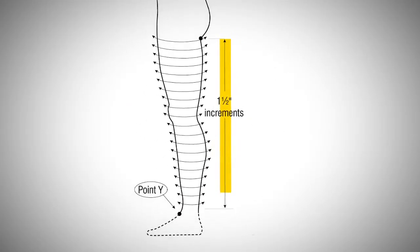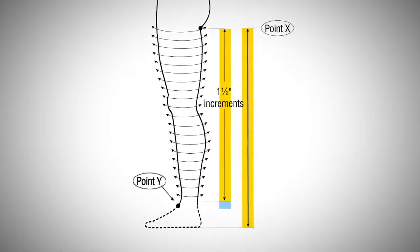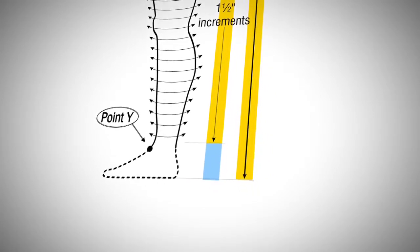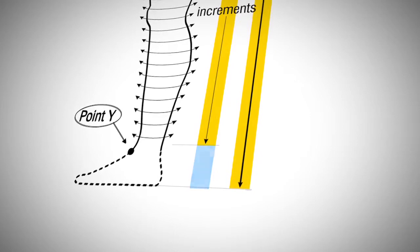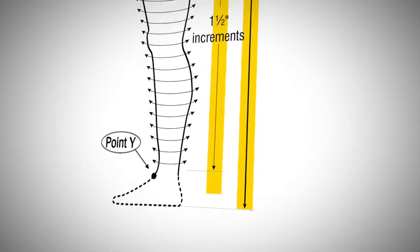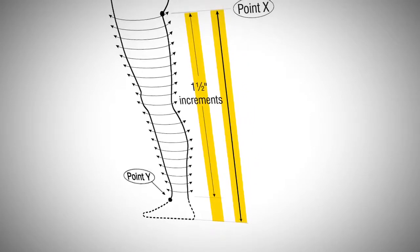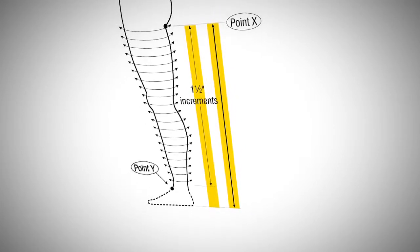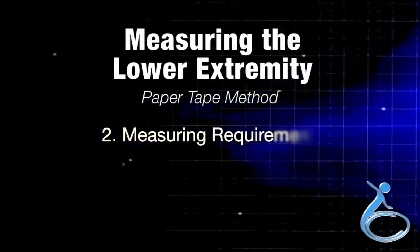The leg circumferences and the one and a half inch increments will tell you how long the patient's leg is. Compare this with the fold-to-floor measurement. If the leg is shorter than the fold to the floor by an amount that roughly corresponds to the height of the foot, it should be correct. But if the leg length is the same or even larger than the fold to the floor, you've probably taken too many circumferences at the top of the leg.